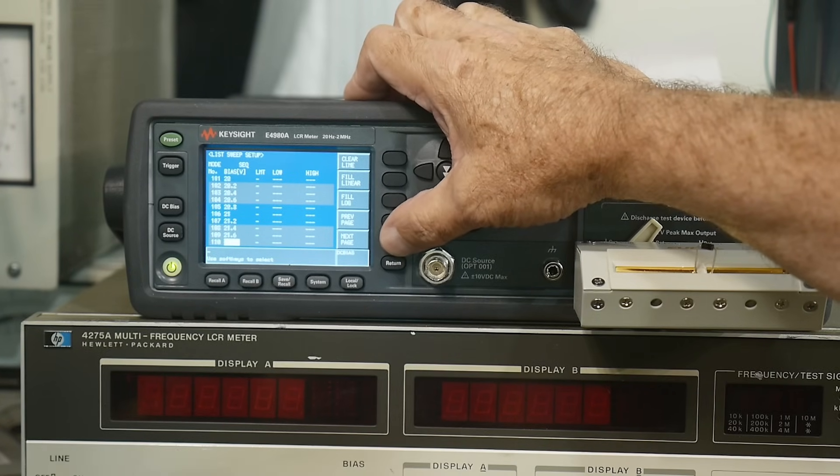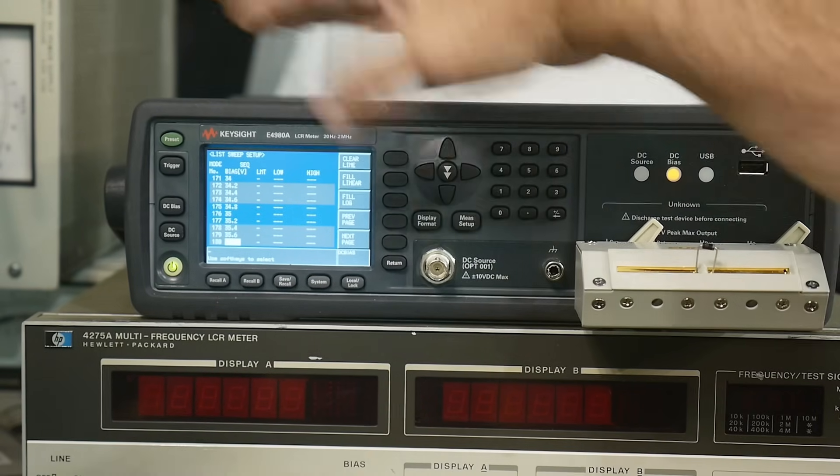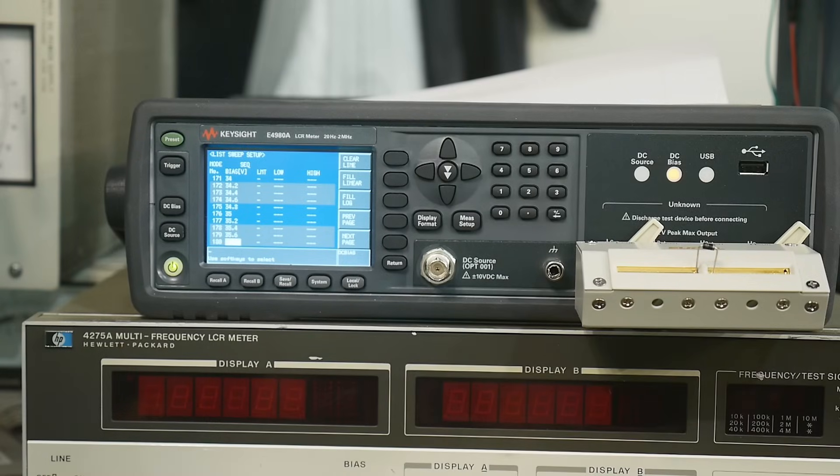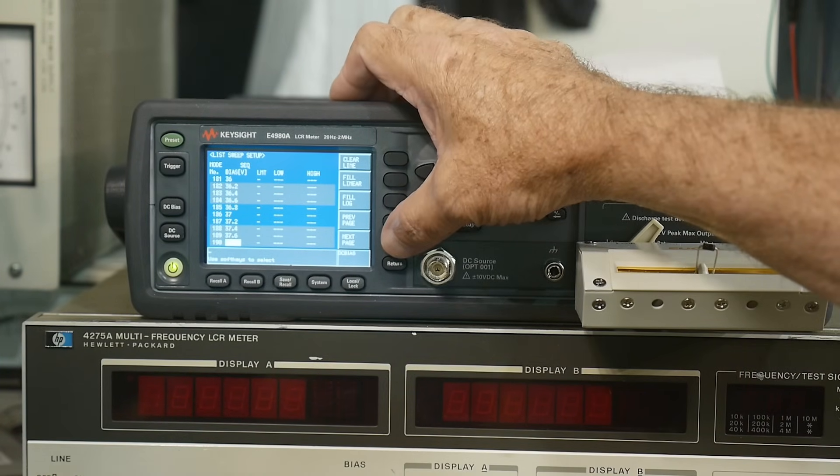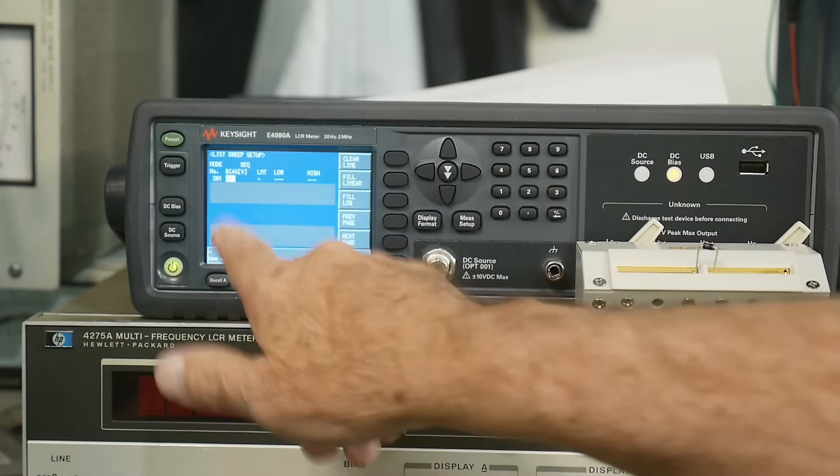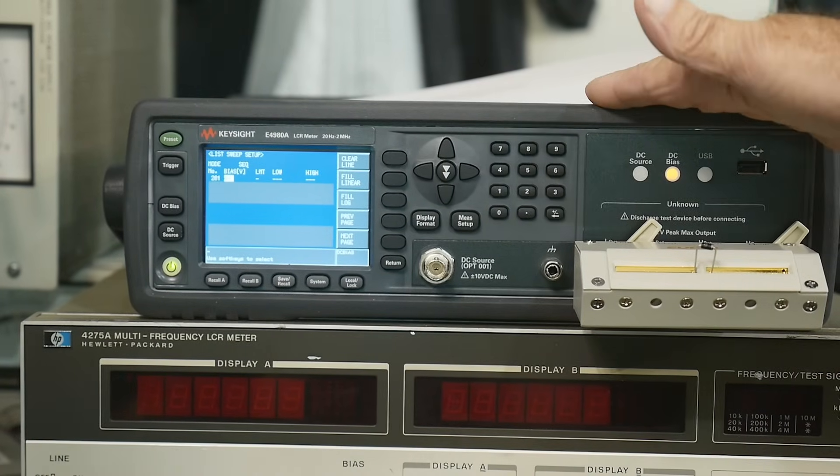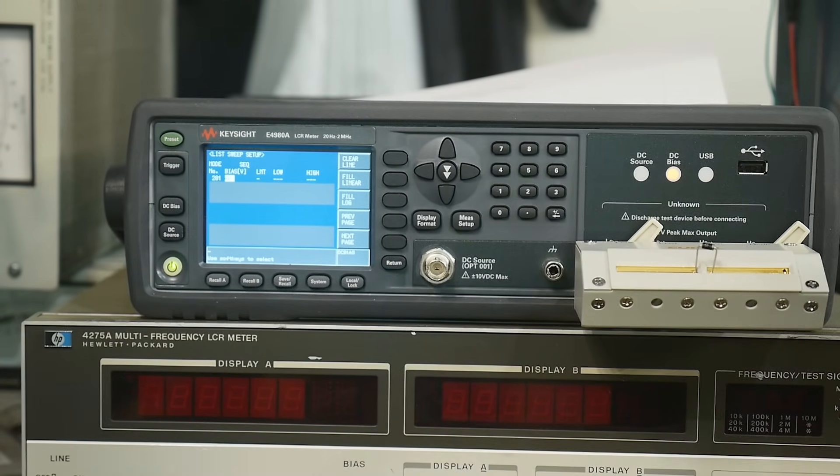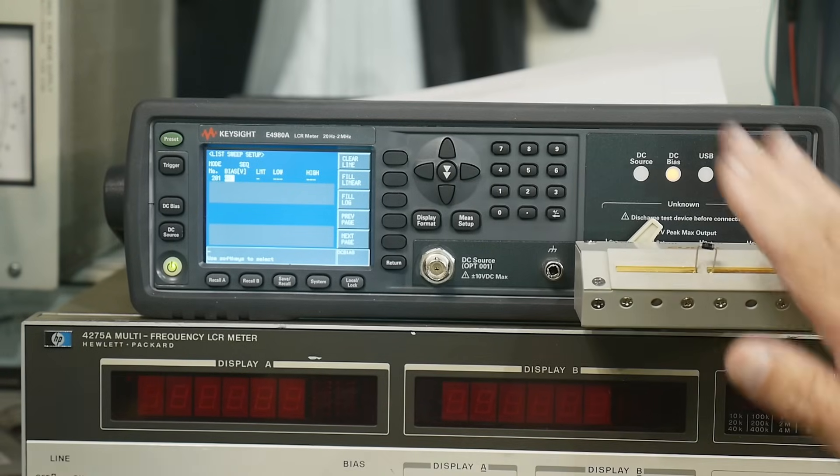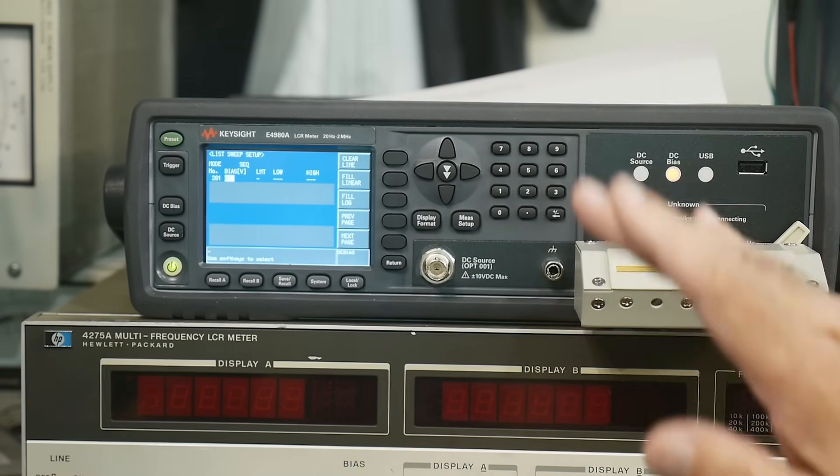So it's going to take those 201 points and it's going to take my starting point and it's just going to fill in the table. And so at 201, it stops at 40 volts. So that's the maximum capability of the machine, a 40 volt DC bias. So I'm going to sweep from zero volts to 40 volts automatically.